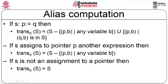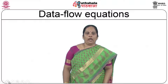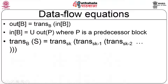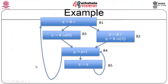The data flow equations are: out(b) = trans(b)(in(b)), and in(b) = union of out(p) for all predecessor blocks p. Trans(b) is computed as trans(sk) composed with trans(sk-1) and so on — computing each statement's transfer function and accumulating them to determine the block's transfer function.